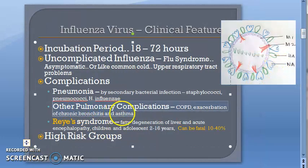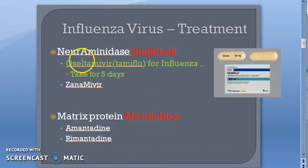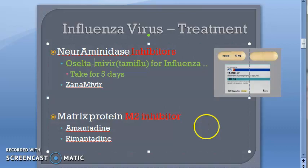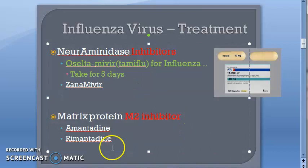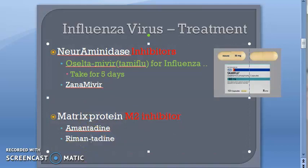There can be exacerbation of chronic bronchitis and asthma. There can also be Reye's syndrome — that is encephalopathy with fatty degeneration of the liver, which can be fatal. Regarding treatment, remember oseltamivir, also called Tamiflu, which is given for influenza and should be taken for five days. You also have the M2 inhibitor — the matrix protein M2 inhibitor — which includes amantadine and rimantadine, though most strains are now resistant.